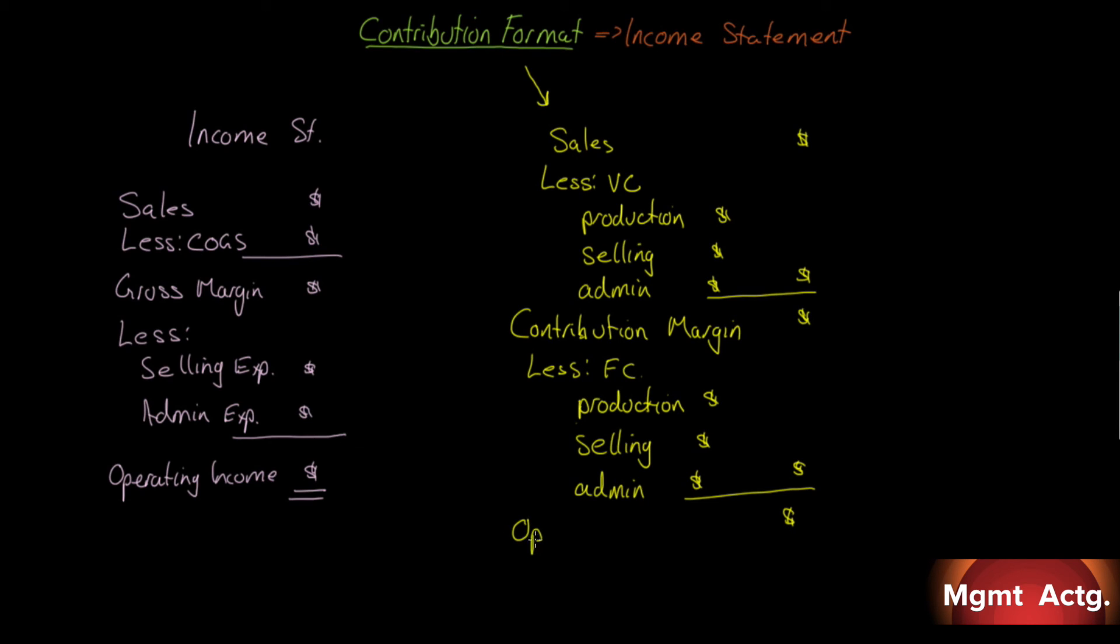So from the traditional form of income statement to the contribution form, the first line and the last line are exactly the same. All we're doing is changing the cost function to the cost type. We're going from a functional income statement to a type. Variable costs first, then we subtract our fixed costs. This makes much more sense when we actually get into the problems.